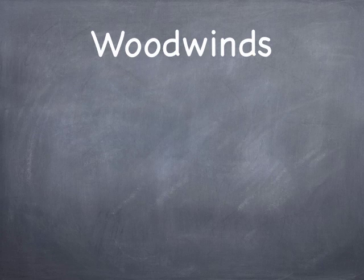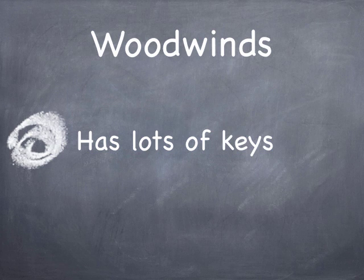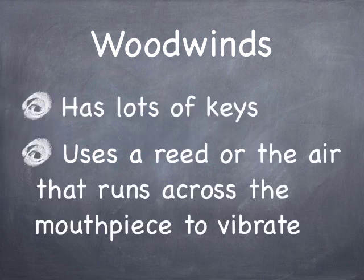So let's start talking about some of the families of instruments. As I mentioned, there are four of them. One of them is woodwinds. Woodwind instruments have lots of keys. They use a reed, or just blowing air across a mouthpiece, and that is what vibrates and causes the sound. You will be playing a recorder when you are in fourth grade — that is a woodwind instrument.